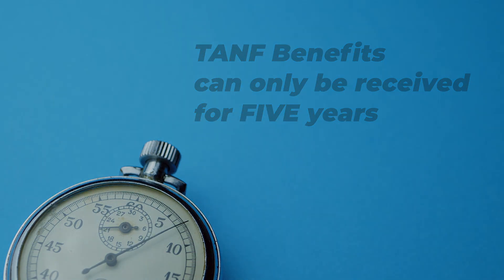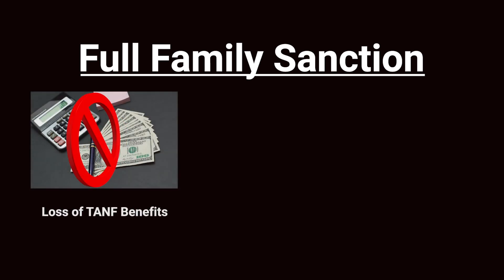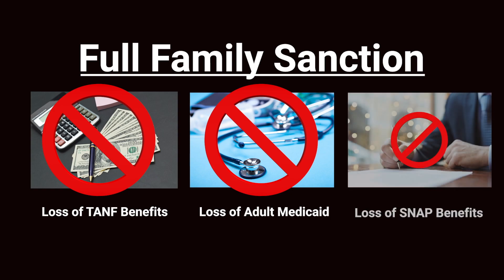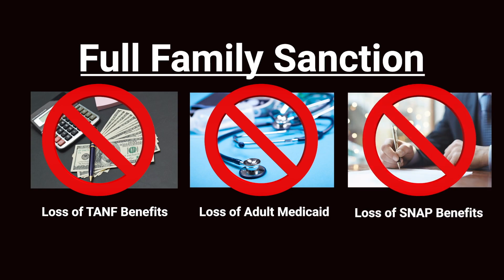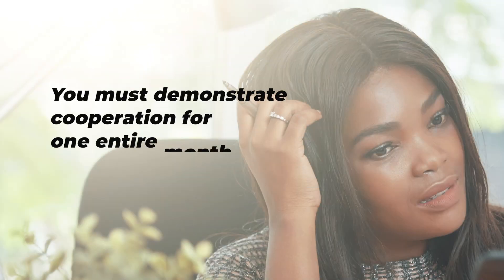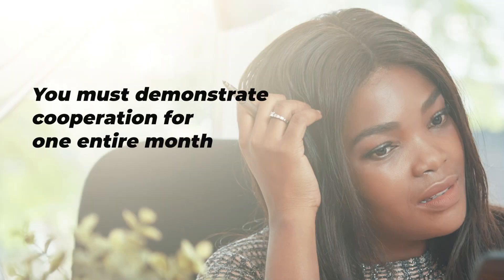If you fail to follow the program requirements, you will face a full family sanction. This means a loss of your TANF benefits, your adult Medicaid, as well as your SNAP benefits. It is very important for you to meet with your career planner weekly and turn in your required participation. To cure a penalty, you must demonstrate cooperation for an entire month.